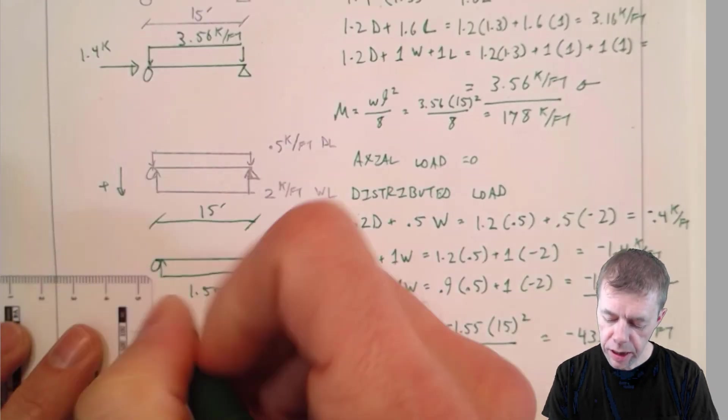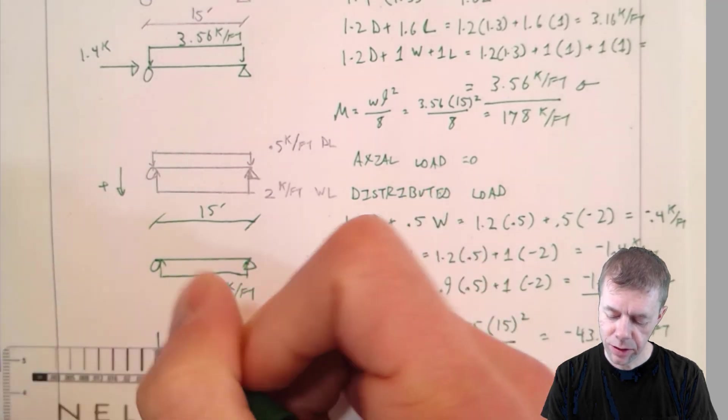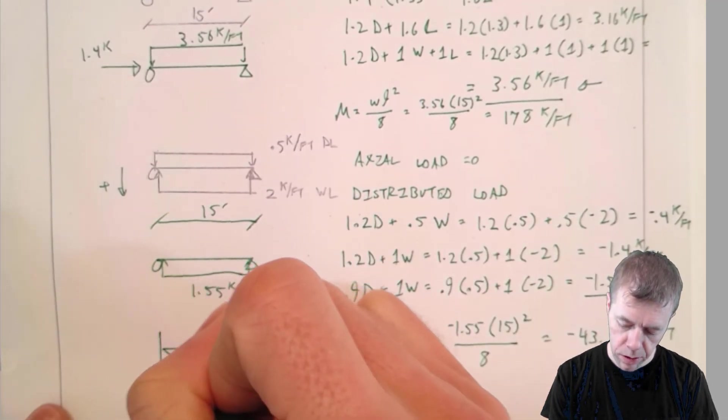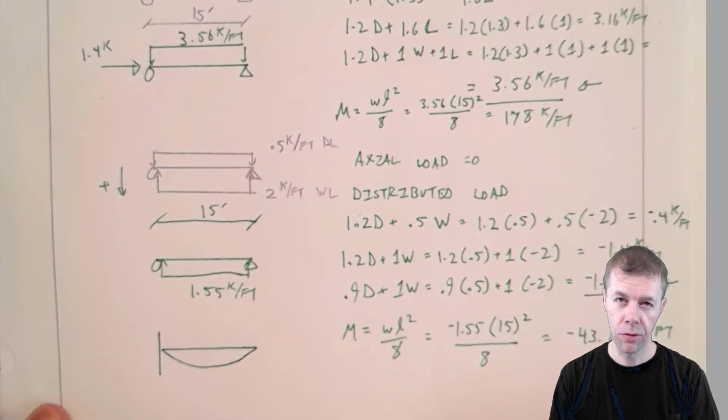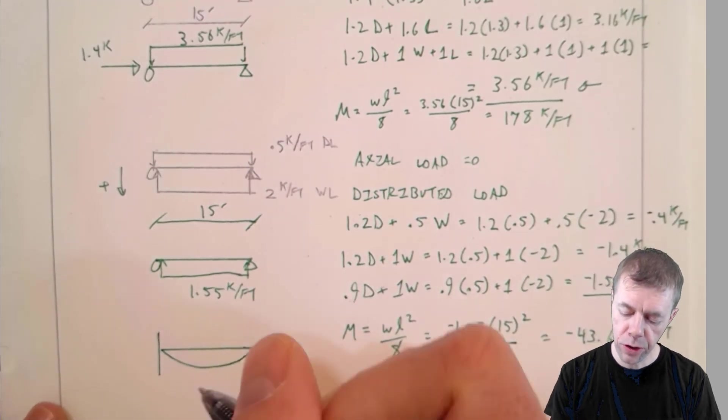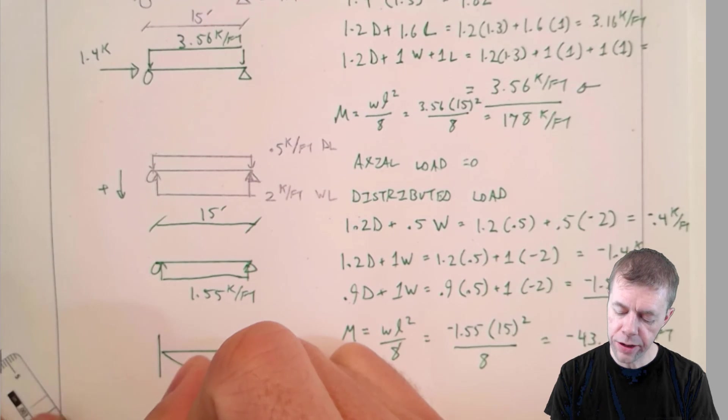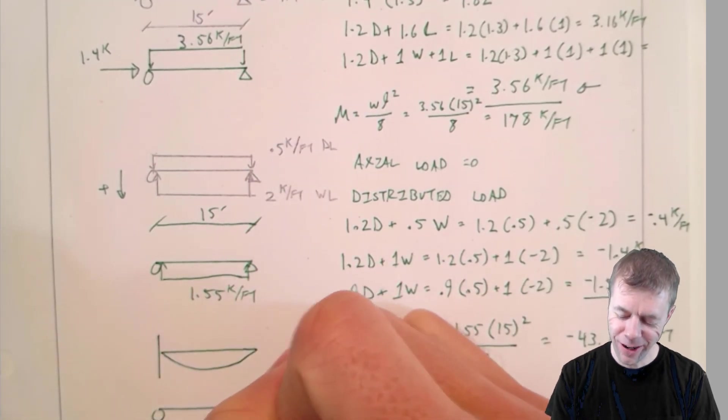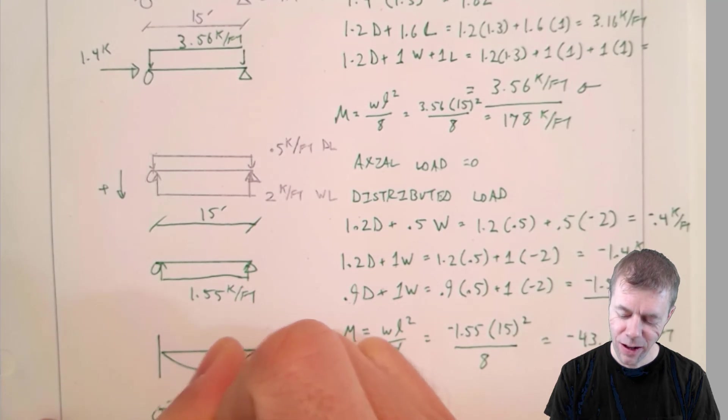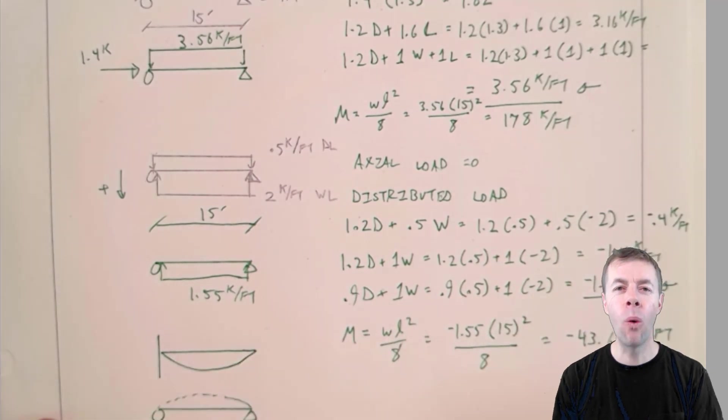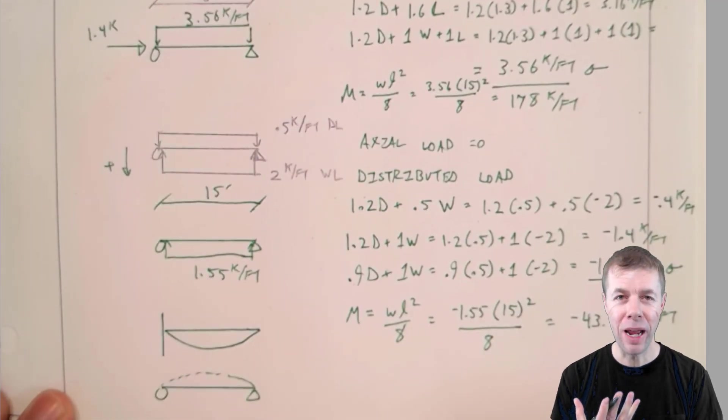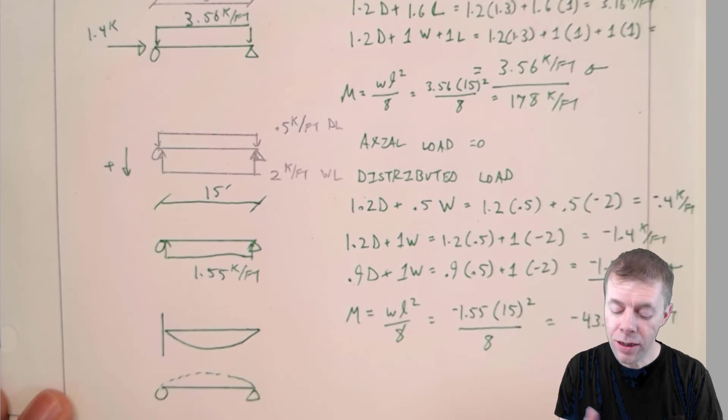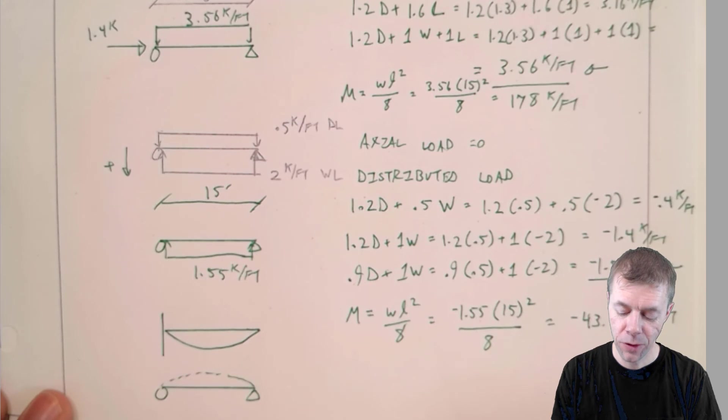So my moment actually looks like this. My moment diagram actually looks like this. The beam is actually going to try and deflect upwards. What? I know, crazy huh? The wind is more than the dead weight, so it's going to try to lift the roof off. And we've got to design for it.